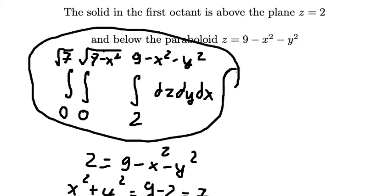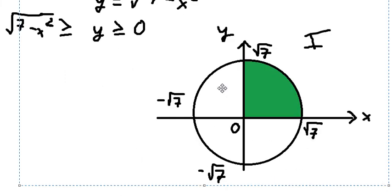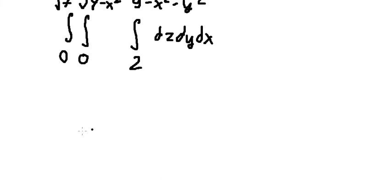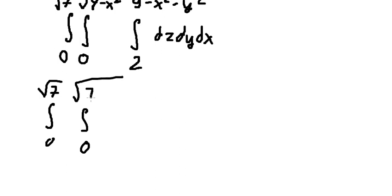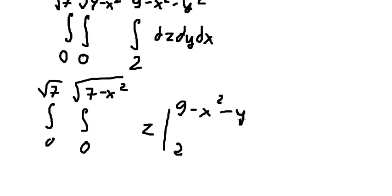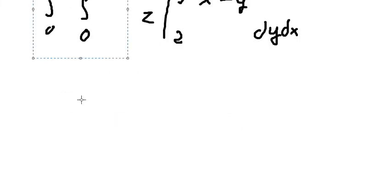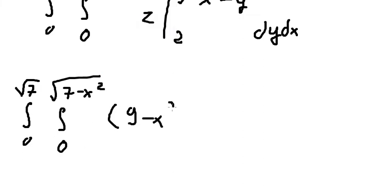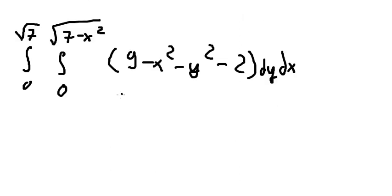Now we calculate the integral. Integrating with respect to z from 2 to 9 minus x squared minus y squared gives us 9 minus x squared minus y squared minus 2, which equals 7 minus x squared minus y squared.